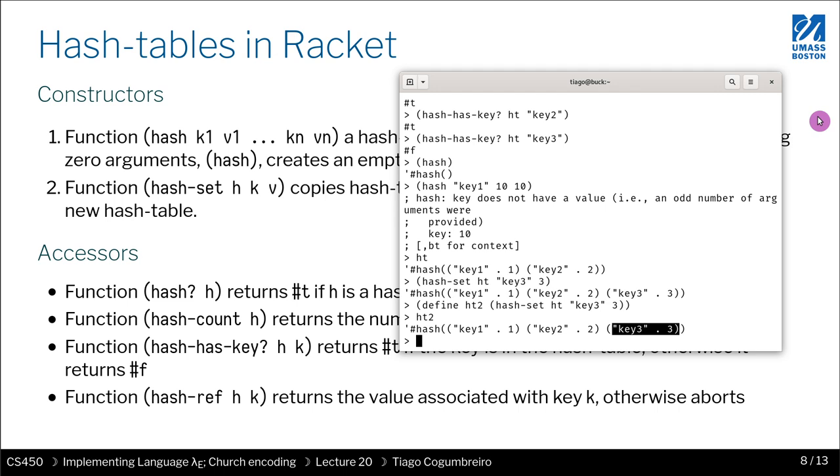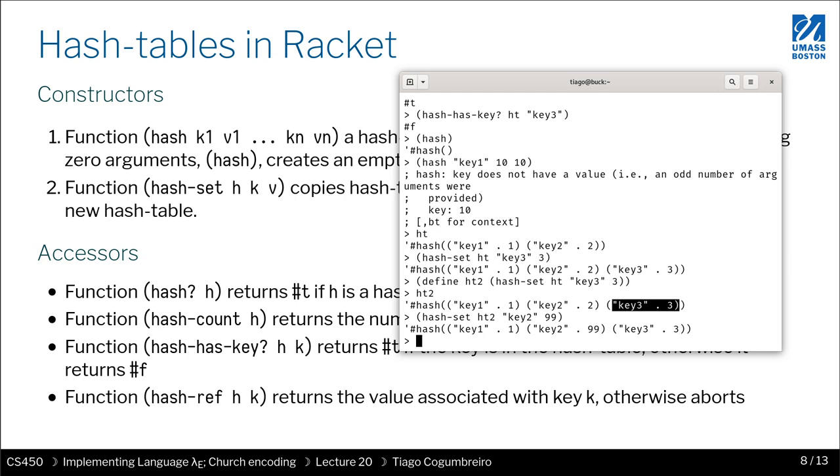So now the last thing we can do is what happens when there's a key collision. So what happens if I'm putting in a key that already exists in the hash table? Let's see what happens. We just do hash-set. And we use hash table two, and let's pass to key two, let's pass number 99. And what we note is that no error happens. And indeed, this is a behavior that we want to happen, which is, it returns a new hash table where key two was redefined to now be mapped to 99.